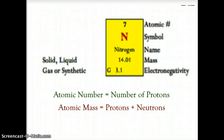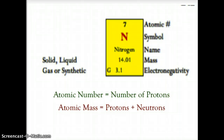The last thing in each element box is in the lower left corner: a letter — S, L, G, or synthetic. In this example it's a G, which tells you whether the element is a solid, liquid, gas, or synthetic in its natural state.